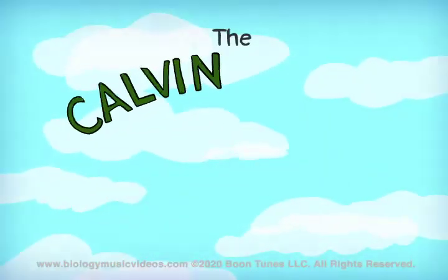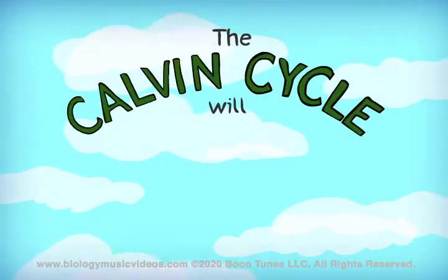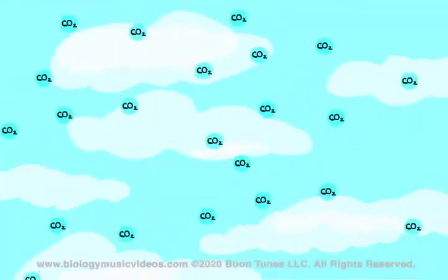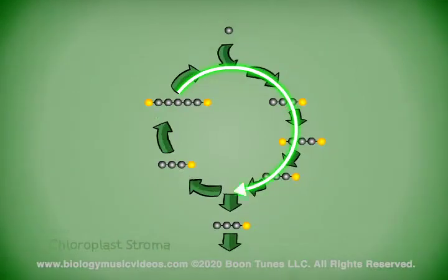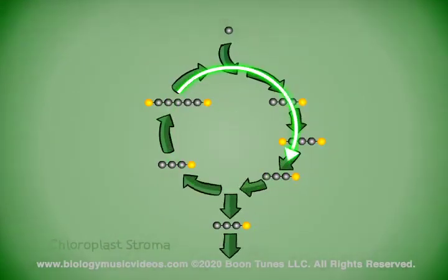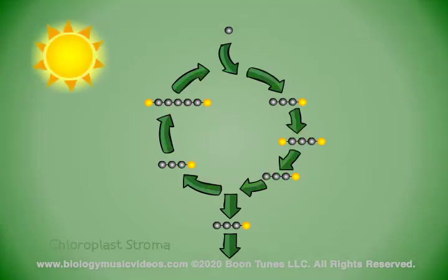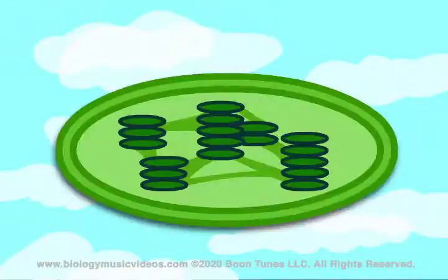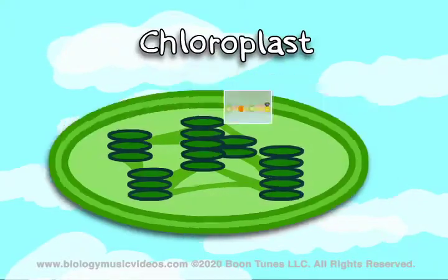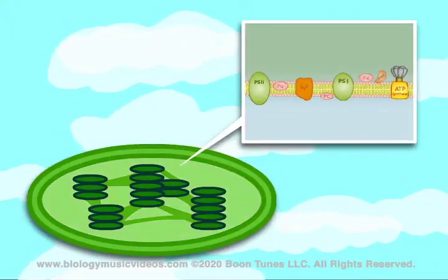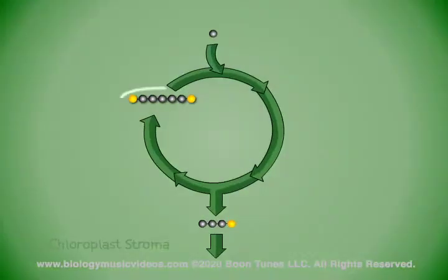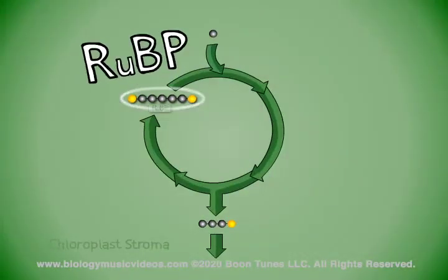The Calvin Cycle will synthesize sugar from carbon dioxide, over and over — spins and spins, finishing what the life begins. The Calvin Cycle takes place last in the stroma of the chloroplast, the fluid-filled matrix that's contained outside the thylakoid membrane.